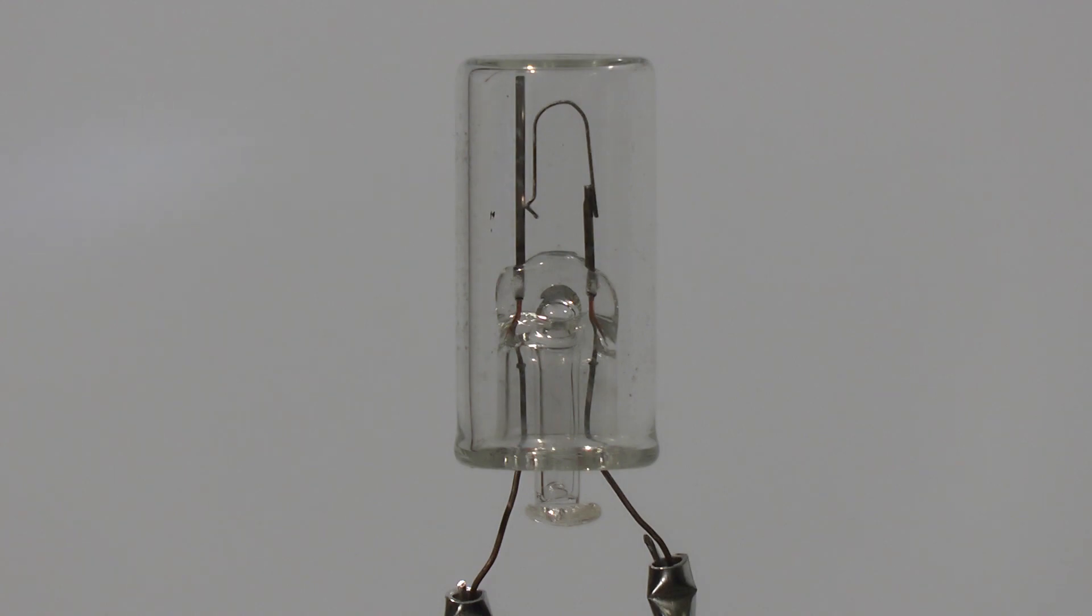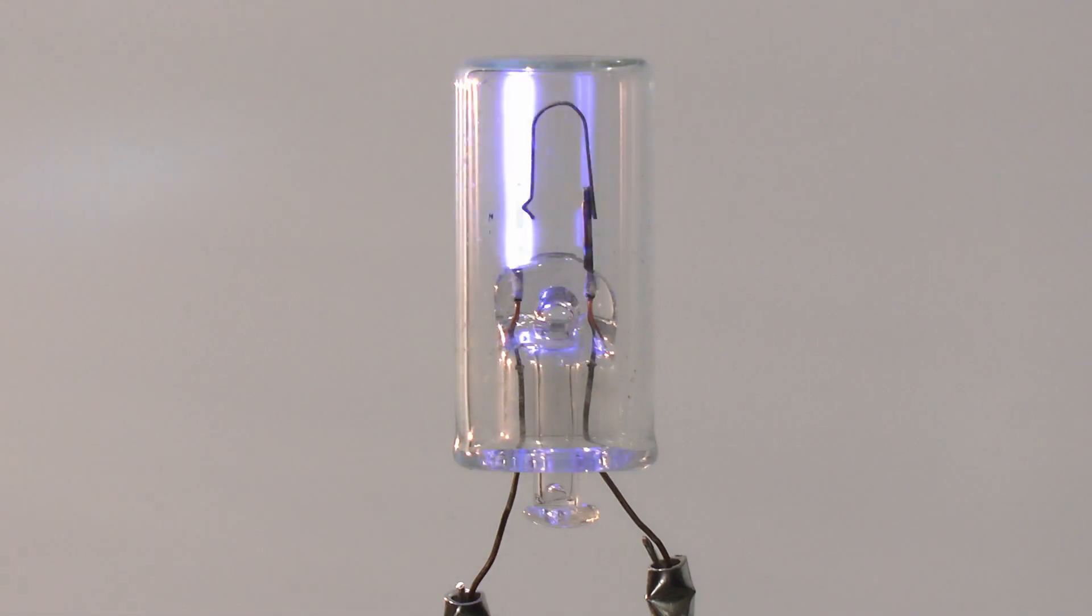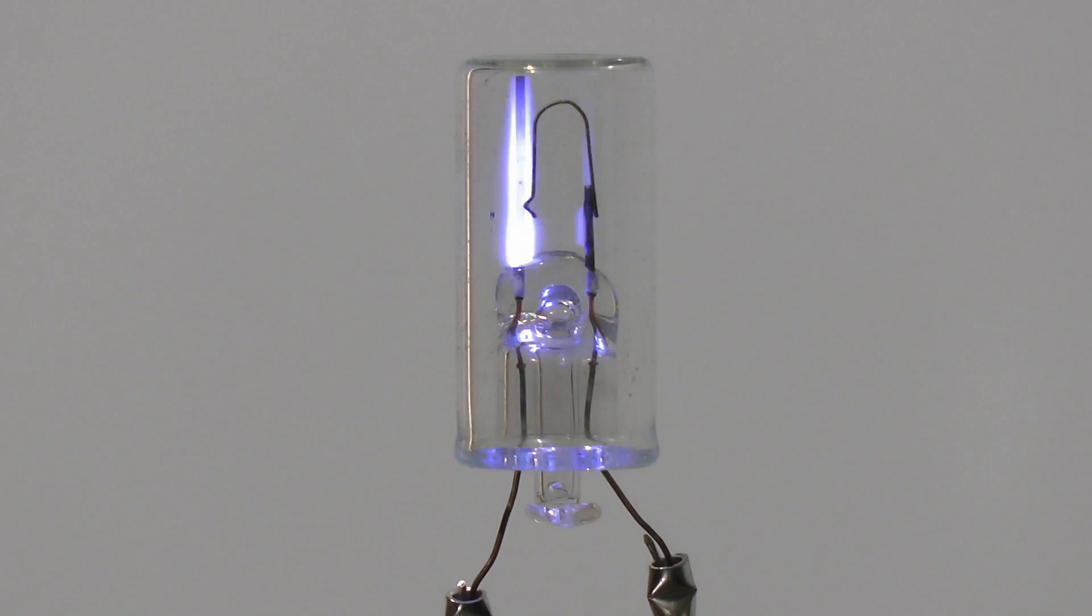And then of course finally that 25 watt incandescent which should do even worse. So again it's pretty much light straight away. And again it's just flickering away there, rapidly opening and closing the contact and probably causing lots of interference as well as the capacitor has been removed.